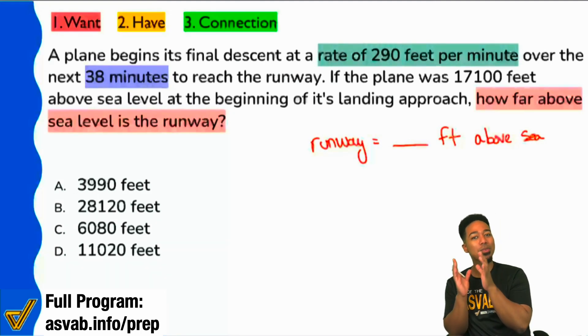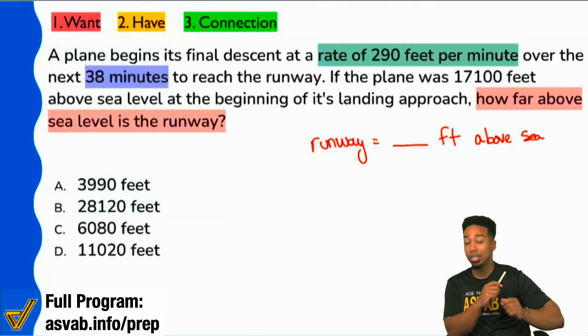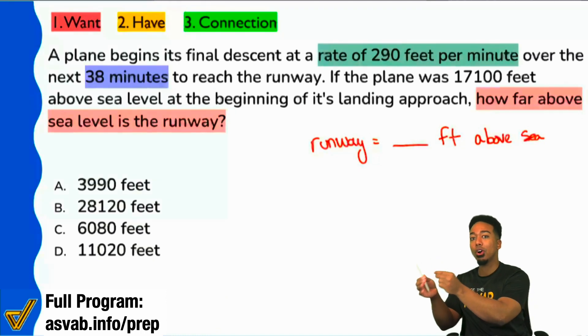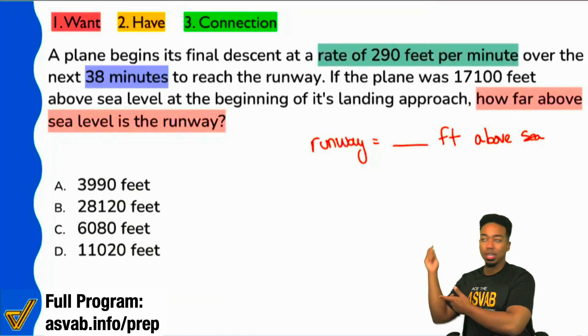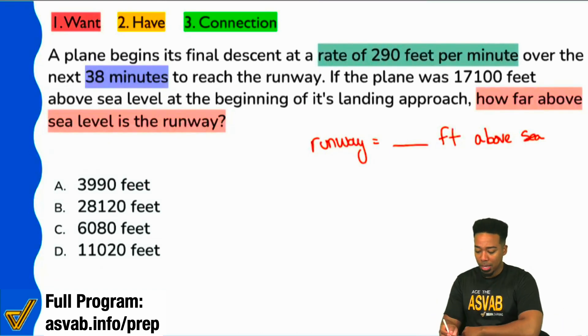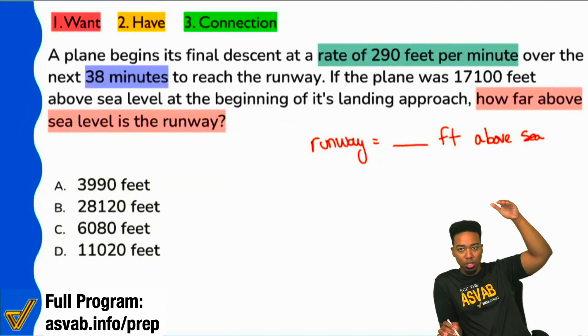So at some point we know that we will probably need to multiply those, but don't make any assumptions. We all know how to spell assume. You make an ass out of you and me. So don't assume anything, okay? But know that if we were going to go the DRT route, well, if we wanted to find the distance that this plane descended, we could do the rate and the time together. Keep that in the back of your head. Keep it moving though. Then it says, if the plane was this many feet above sea level at the beginning of the approach, how far above sea level is the runway?